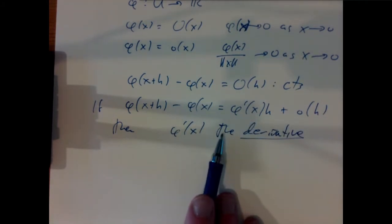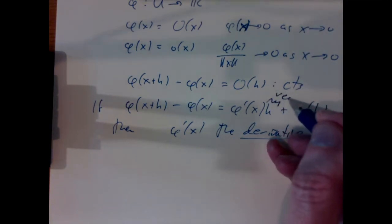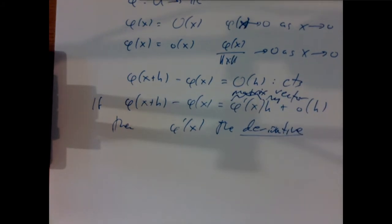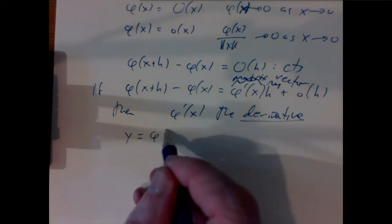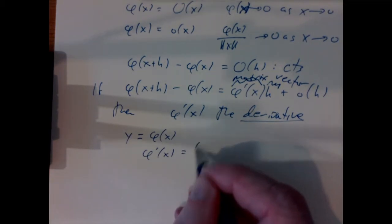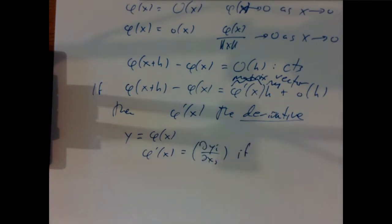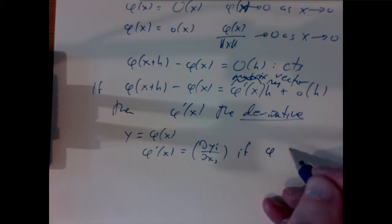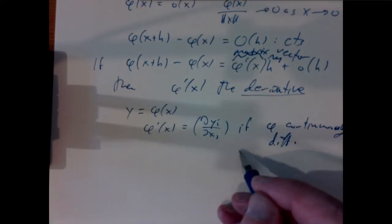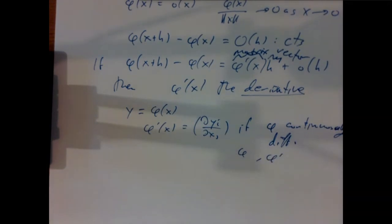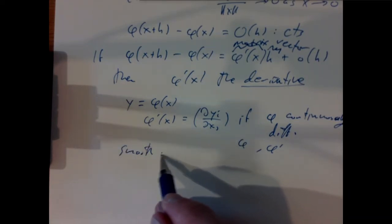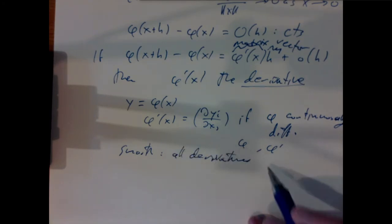This looks exactly like one variable calculus, but for many variable calculus the h here is a vector, and so the φ′ expression is a matrix. The derivative is a matrix, and you are familiar with the fact that if y = φ(x), then φ′(x) for a smooth function will be the matrix of partial derivatives. Smooth for us means that all derivatives of all orders exist.